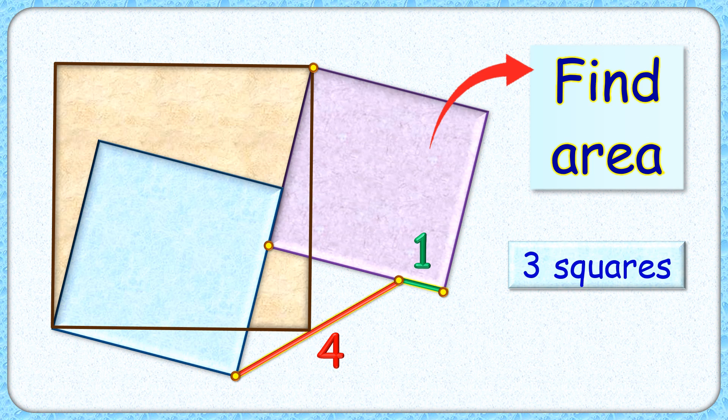Welcome everyone to this interesting question. We are given three squares and the length of the green and red line segments as one and four centimeters. The exciting part is, with this limited data, we have to find the area of this purple square.